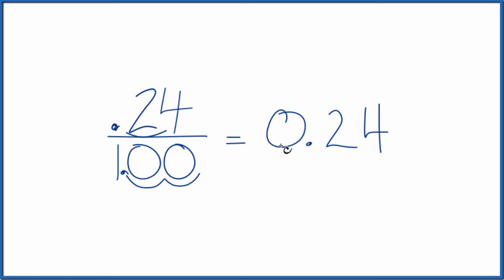And that's the same thing as 0.24. So the fraction 24 over 100 is equal to the decimal 0.24. This is Dr. B, and thanks for watching.